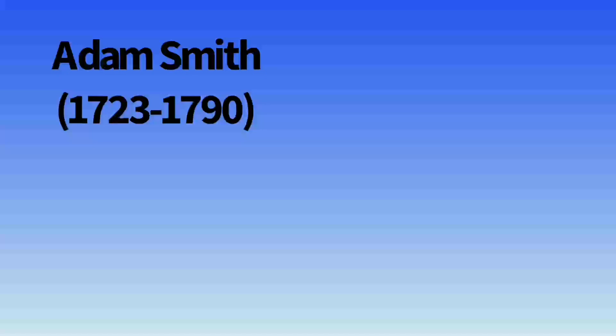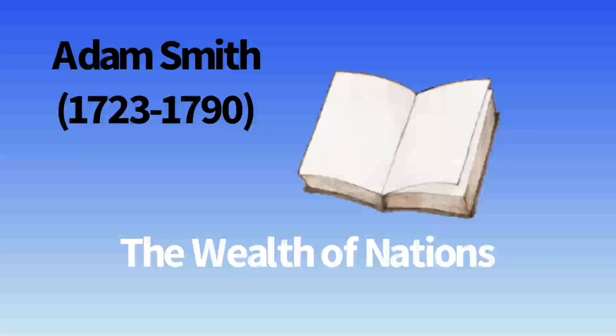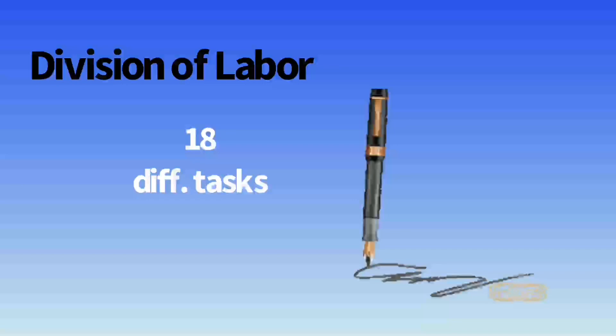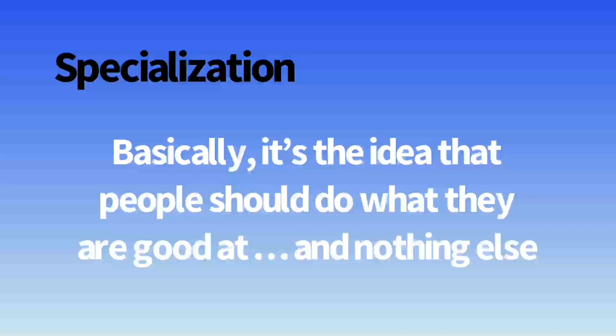It's hard to talk about economics without talking about Adam Smith. He came up with this idea of the division of labor, which he wrote about in his famous book, The Wealth of Nations. Division of labor is the idea that production goes more smoothly if it is broken down into tasks done by different people. Adam Smith's famous example had to do with constructing a pen — he counted a total of 18 different tasks included in making a pen.